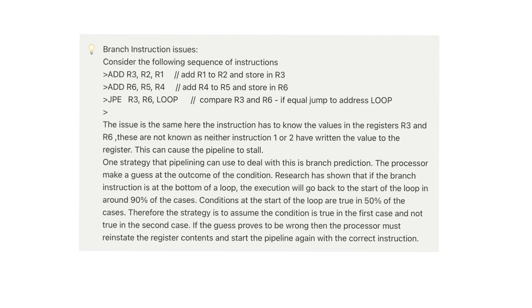The issue is the same here. Here, the instruction has to know the value in the registers R3 and R6. These are not known as either instruction 1 or 2 have written the value to the register. This can cause the pipeline to stall. And as we've discussed before, this can also be called as a hazard, pipelining hazard.